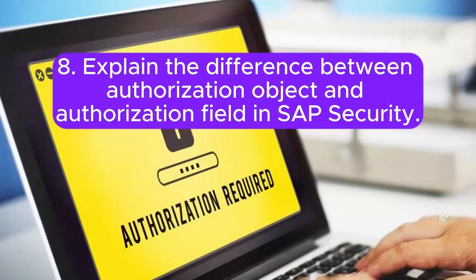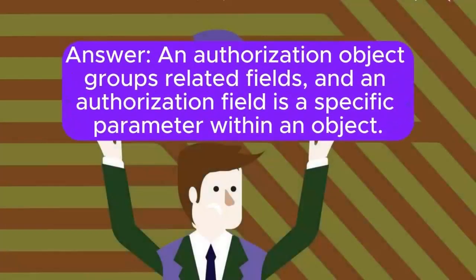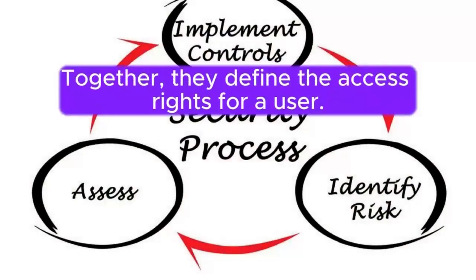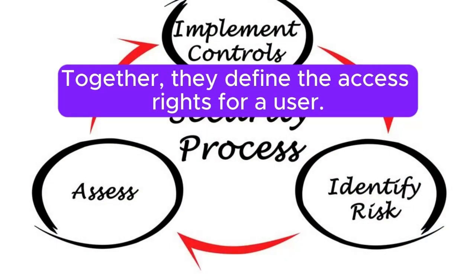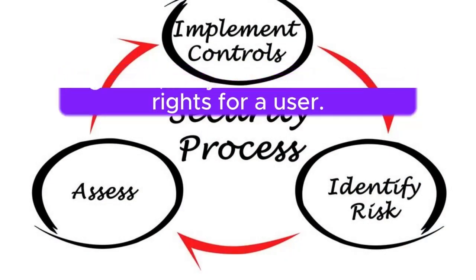Question 8: Explain the difference between an authorization object and an authorization field in SAP security. Answer: An authorization object groups related fields, and an authorization field is a specific parameter within an object. Together, they define the access rights for a user.